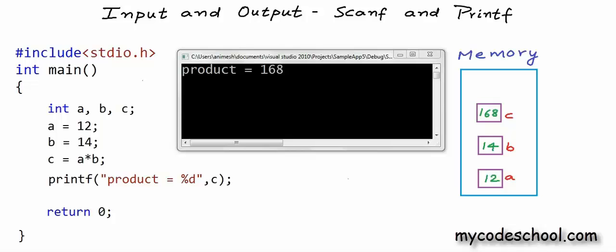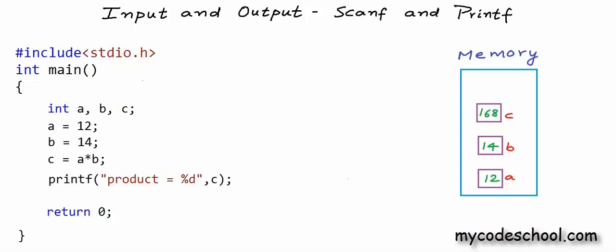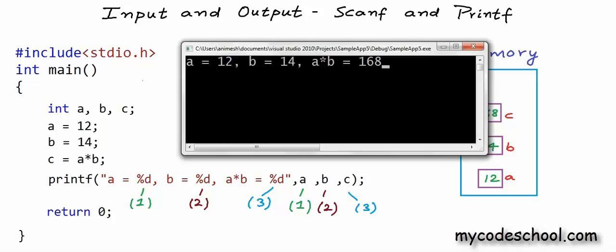Now I want to write my printf statement with multiple %d, and I want you to guess the output. We have three %d in the string constant and in total we are passing four arguments to printf — apart from the string constant, we are passing three integers, one corresponding to each %d. While formatting, printf will replace the first %d with the value in a, the second %d with the value in b, and the third %d with the value in c. If I run my program, this is how the output will look.